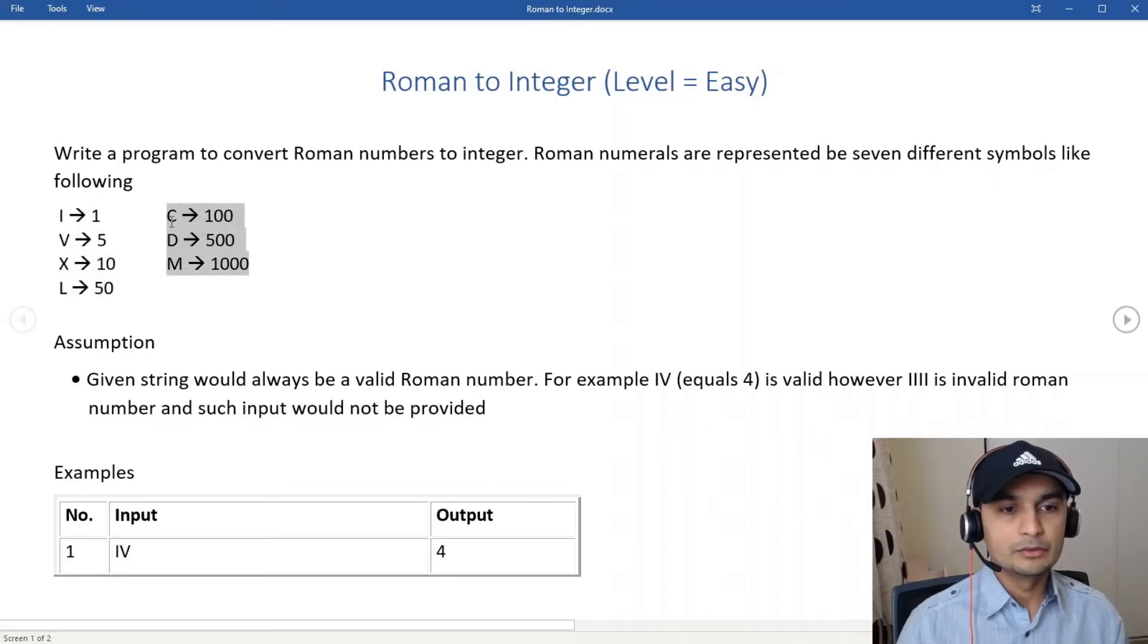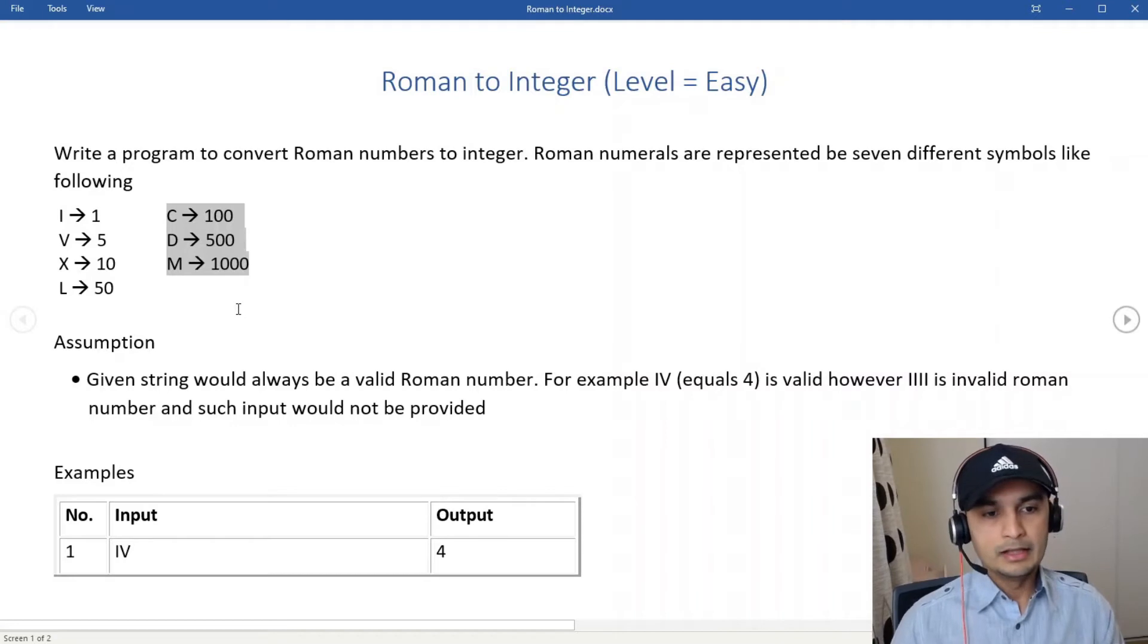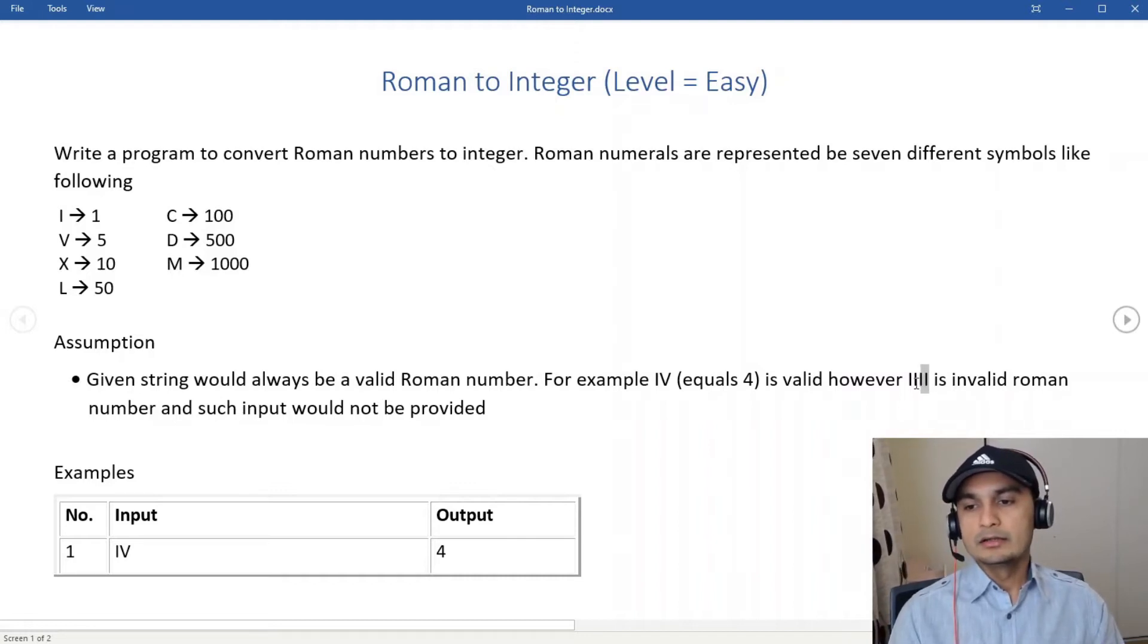These are the pretty straightforward roman literals and their respective integer values: I, V, X, L, C, D, M with their respective integer values. Just one assumption is there that the input would always be a valid roman string. So like for example IIII which is not 4 - correct way to write 4 in roman is IV. So one less thing to care about - the string would always be a valid roman number.